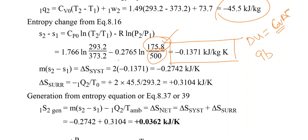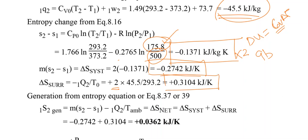The total entropy change of the system is 0.1371 multiplied by the mass of 2 kg. For the surroundings, since heat Q = -45.5 kJ/kg was lost from the system, the entropy change of the surroundings is -Q/T_surroundings = +45.5/293.2, multiplied by mass 2 kg, giving the surroundings entropy change.